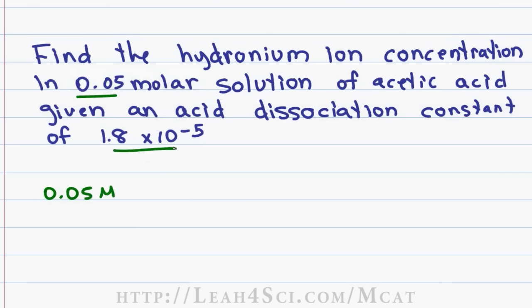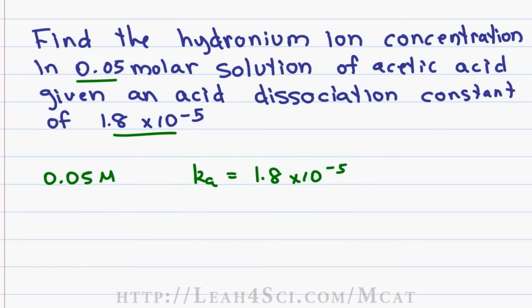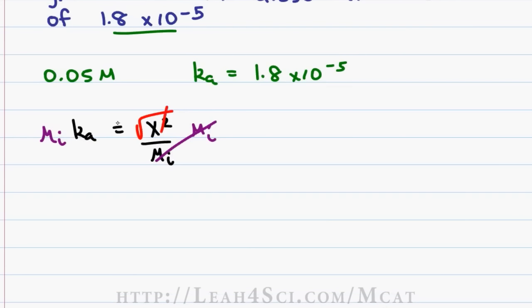We have a 0.05 molar solution and a Ka of 1.8 times 10 to the minus 5. We'll set up the equation using the chemistry trick of Ka equals x squared divided by the initial molarity where the H plus concentration equals x. I like to simplify my equations by isolating x and then plugging in the numbers to solve. So we'll multiply both sides by the initial molarity and then take the square root of each side to isolate x.